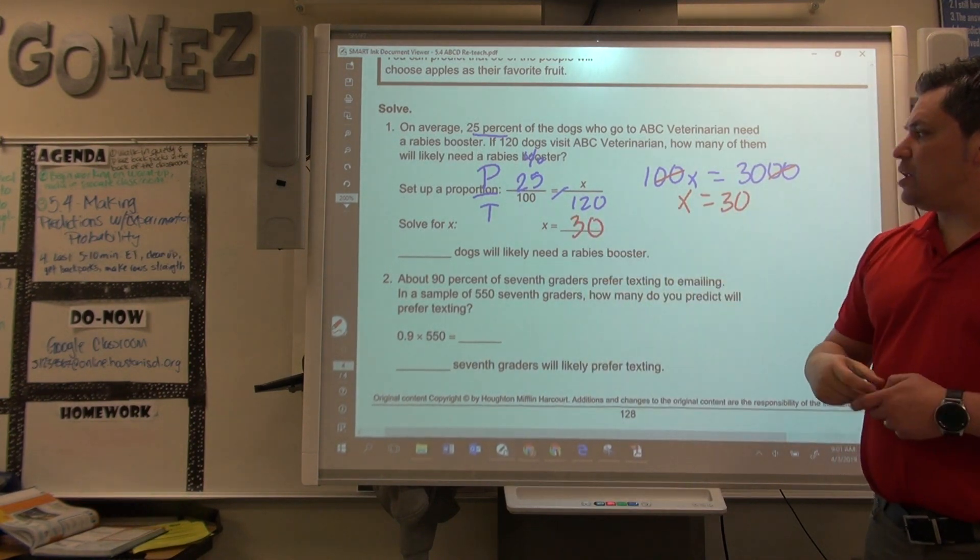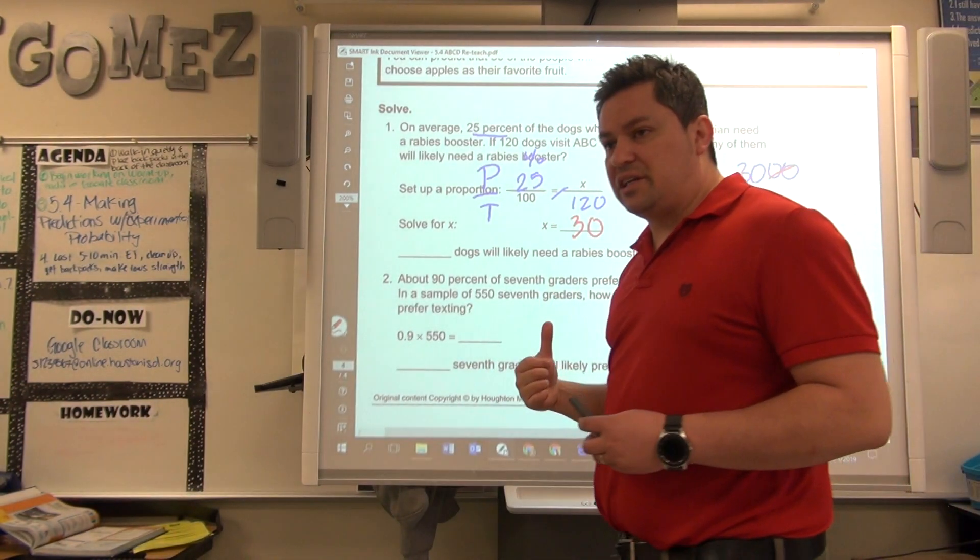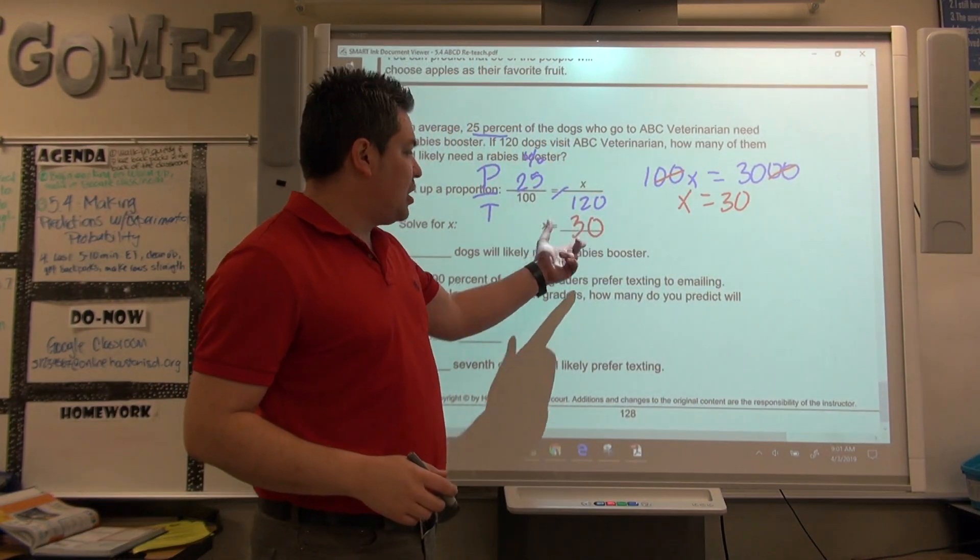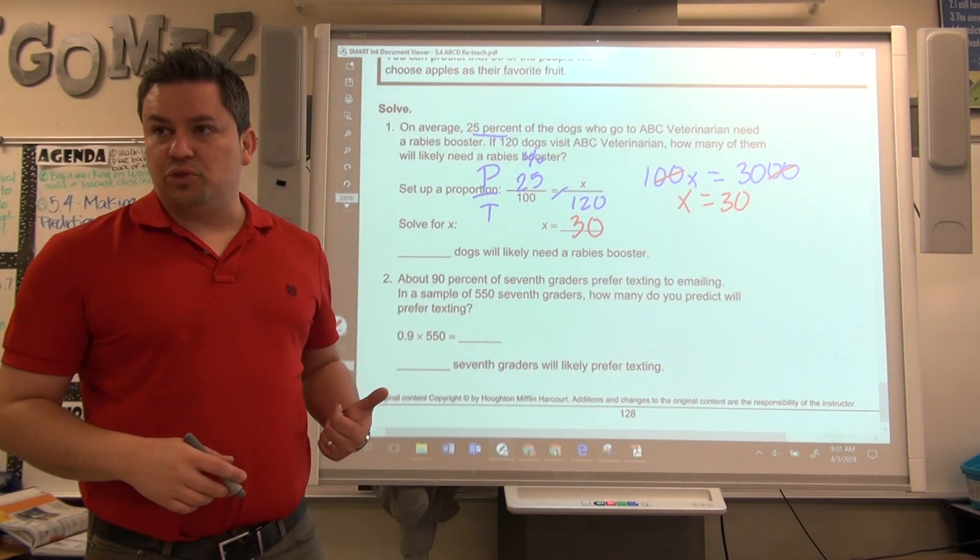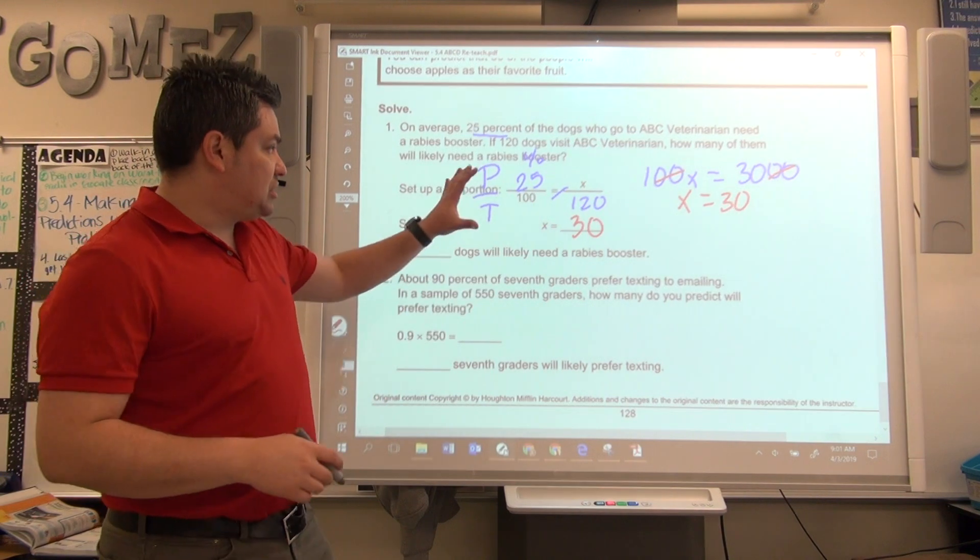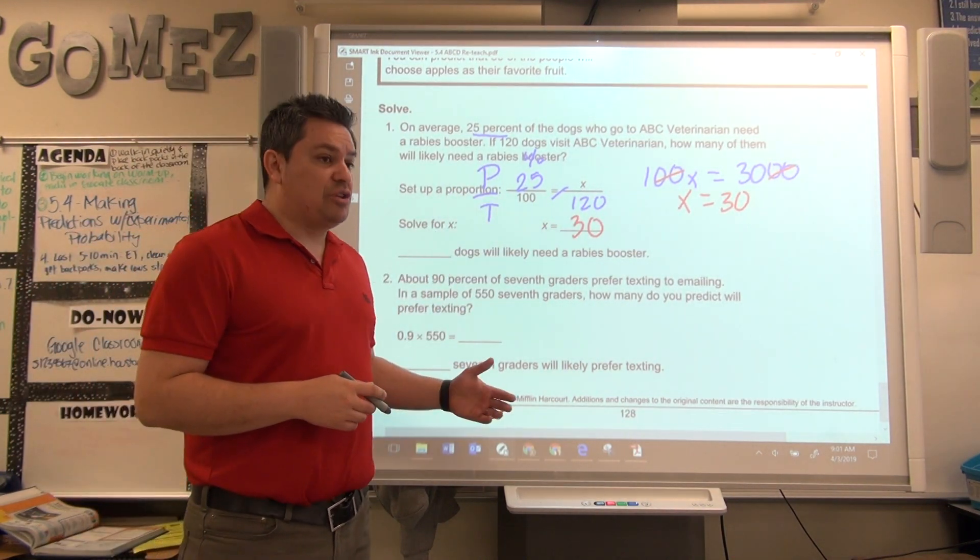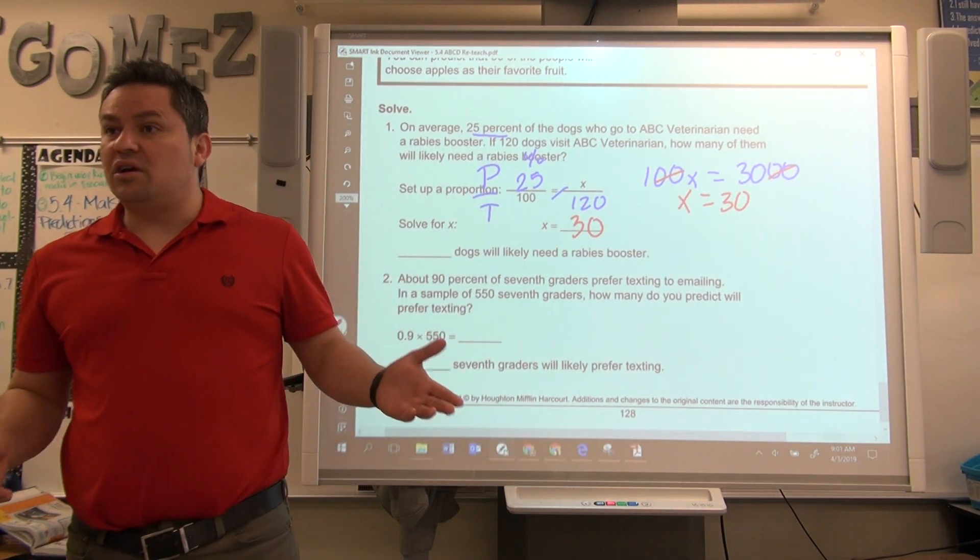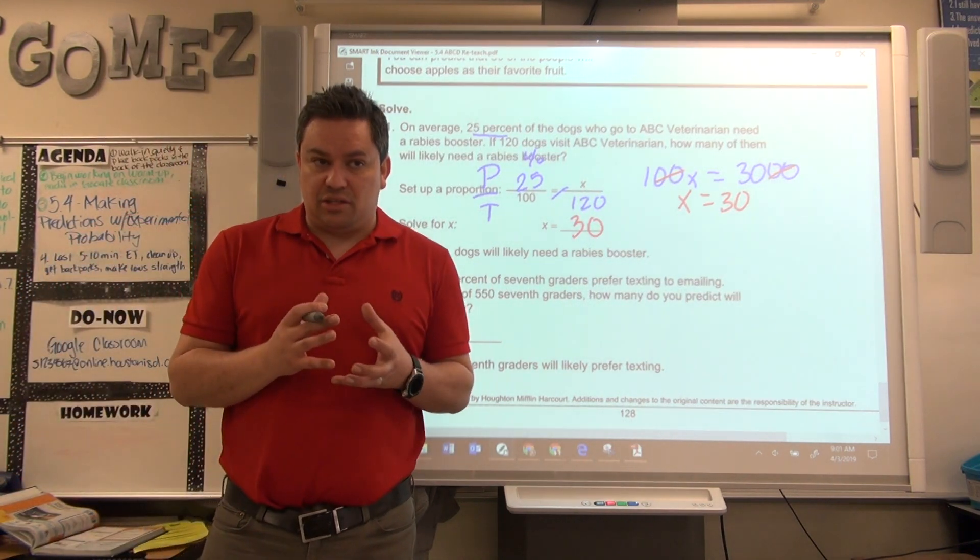So, X equals to 30, right here. So, out of the 120 dogs that goes to the clinic, you can expect about 30 of them to get the rabies booster. That's just an experiment. It might be 28, maybe 32, 33, but it's still within the range.